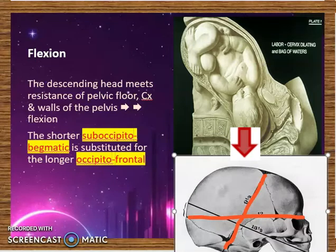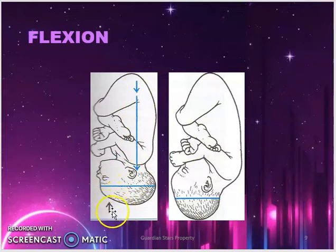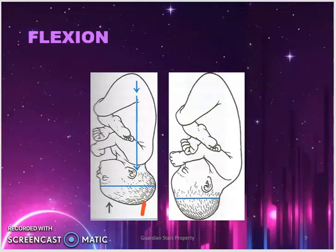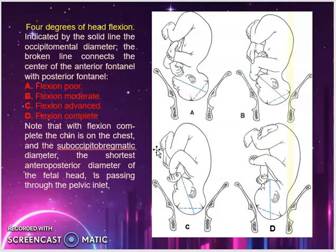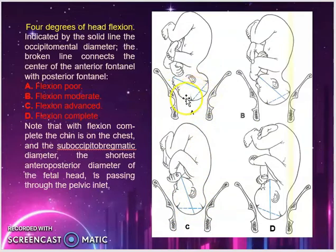The diagram shows flexion with the appropriate part of the head leading. As the fundus pushes the baby down, the fetal head meets pressure from the pelvic floor muscles, causing flexion. If pressure is applied differently, deflection can occur and the presenting part will be the face. There are four types of flexion: poor flexion, moderate flexion, advanced flexion, and complete flexion — labeled A, B, C, and D in the diagrams. We want the shorter diameter to present for easy delivery.